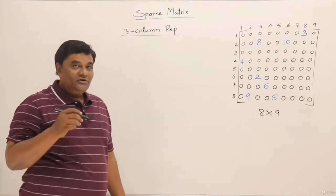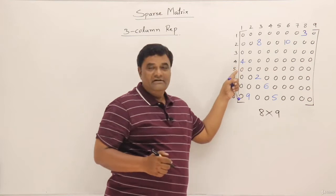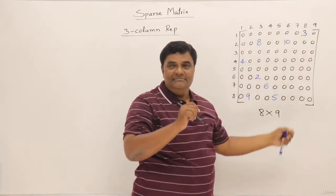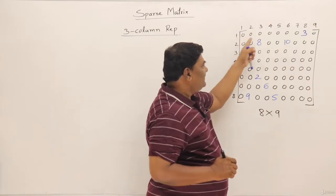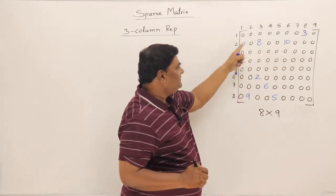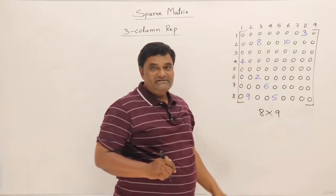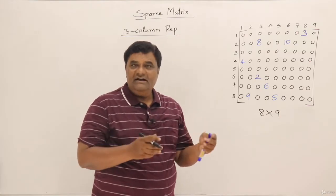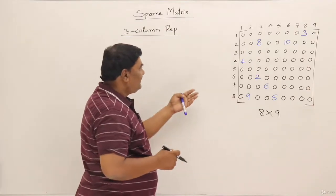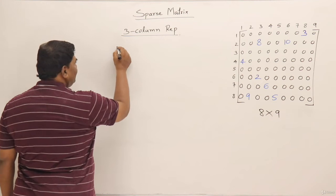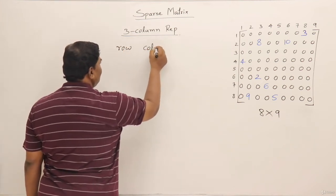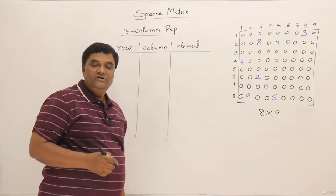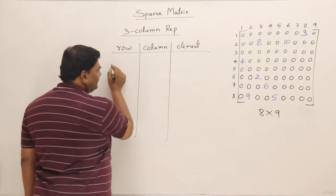For the coordinate list, for every nonzero element we need three things: its row number, column number, and the element itself. For example, element 3 is at row 1, column 8; element 8 is at row 2, column 3. We have a tuple of three values for each element. We can represent these as three columns: first column is row, second is column number, and the third is the element itself.